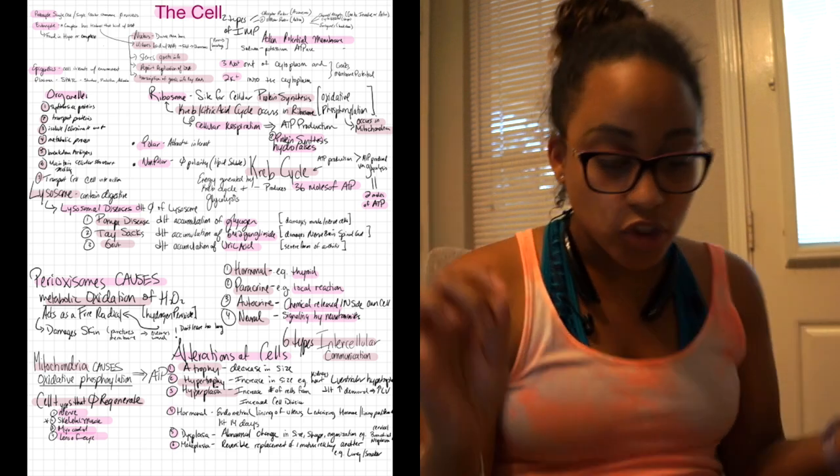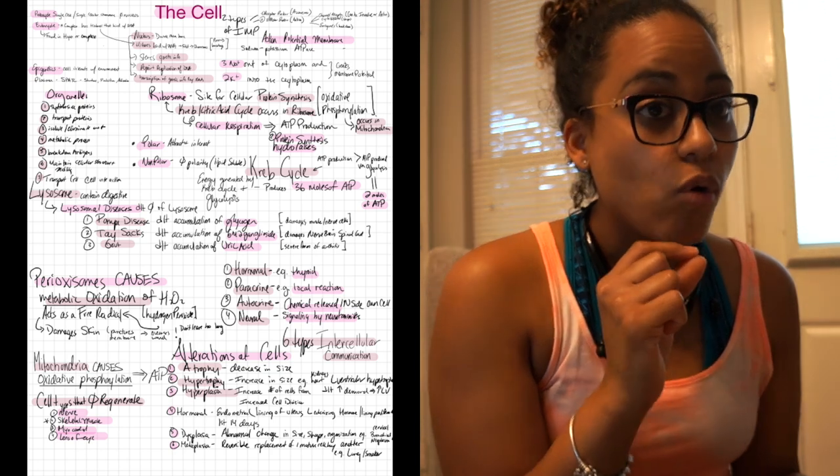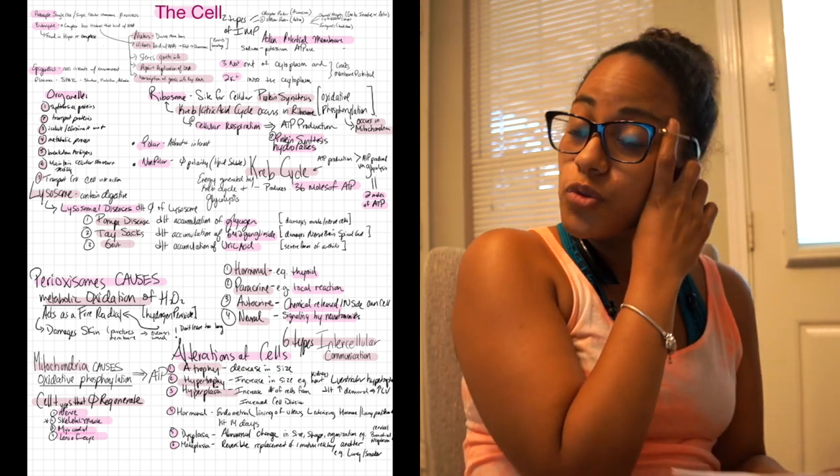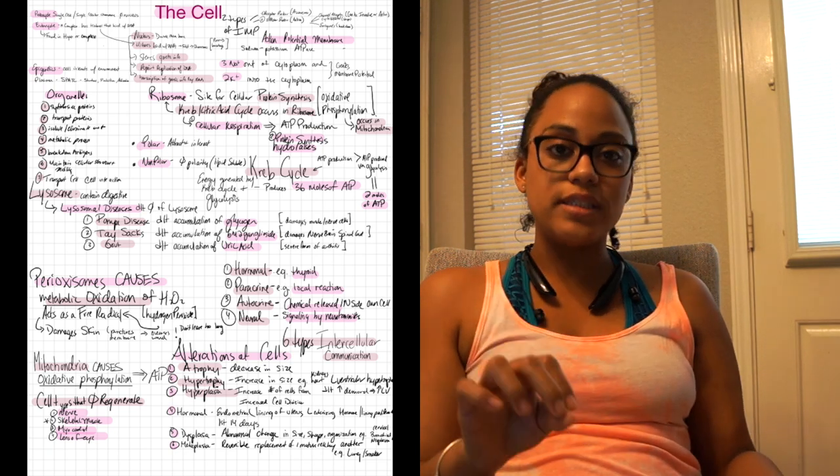We talked about the Krebs cycle. The way we make energy guys, it's the Krebs cycle or glycolysis, but which one's more effective? The Krebs cycle because it produces 36 ATPs versus just glycolysis two.